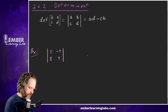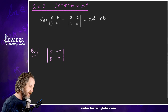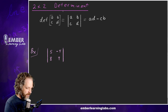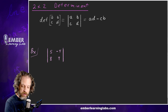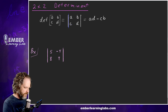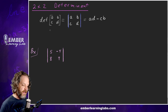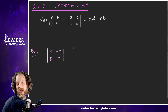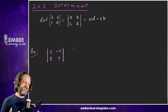We're going to start with a detailed explanation of a 2x2 determinant. First, notation: the determinant of a matrix is written using these straight bars instead of brackets. We use these straight bars to represent the determinant.